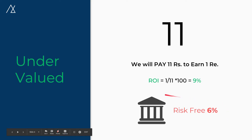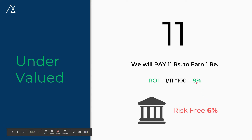Now we compare this with the risk-free rate of return — that is bank FD or government bonds. For today's calculation, let's keep it at 6%, which is India's risk-free return. We can justify the risk we took in the markets by an additional 3% risk premium — that is 9% minus 6%. This is the reason we say our stock market should outperform the benchmark, which is our 6%.